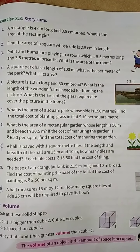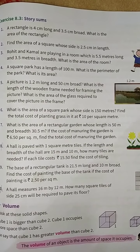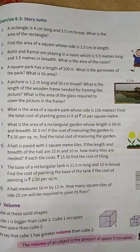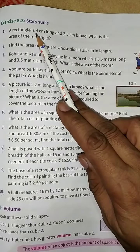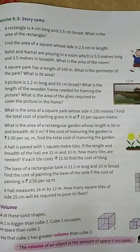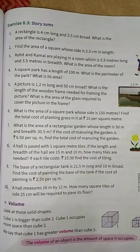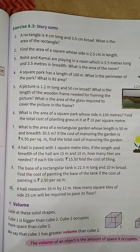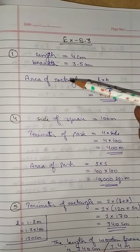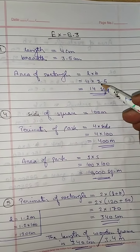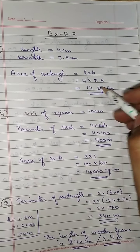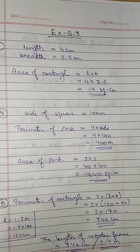First question: a rectangle is 4 cm long and 3.5 cm broad. What is the area of the rectangle? The length of the rectangle is 4 cm and breadth is 3.5 cm and we have to find the area. The area of rectangle is length into breadth, so 4 into 3.5 is equal to 14 square centimeter. This is the area of this rectangle.